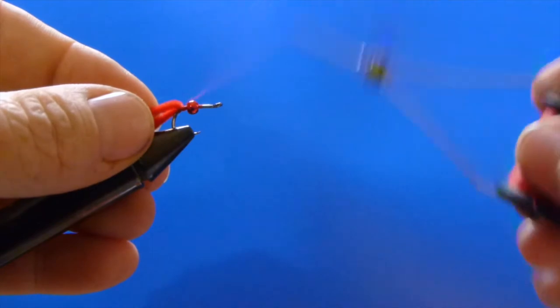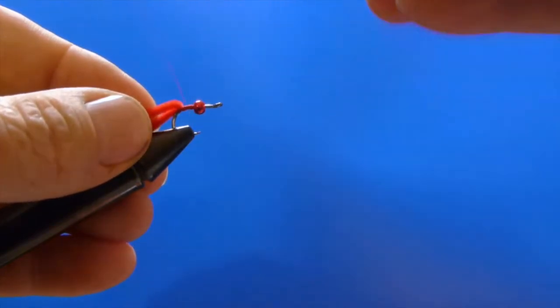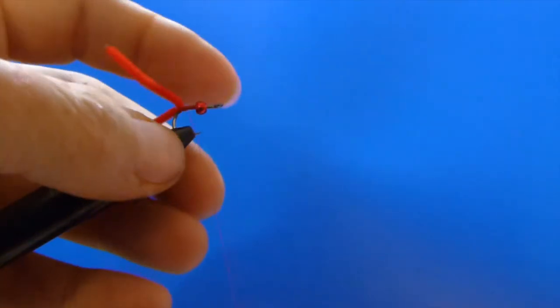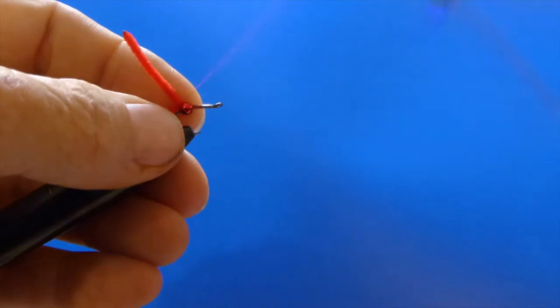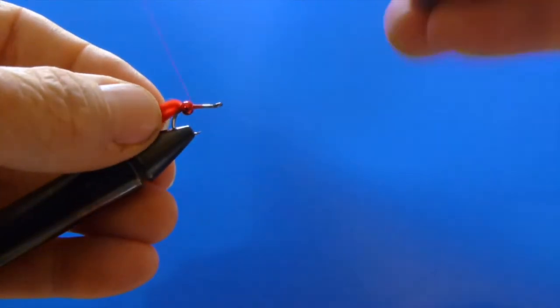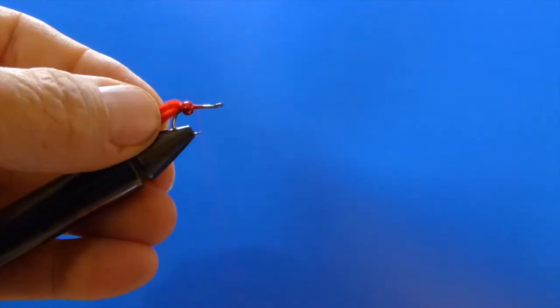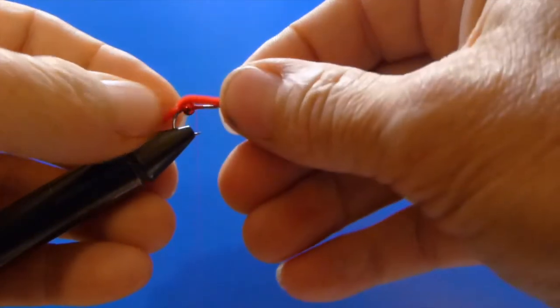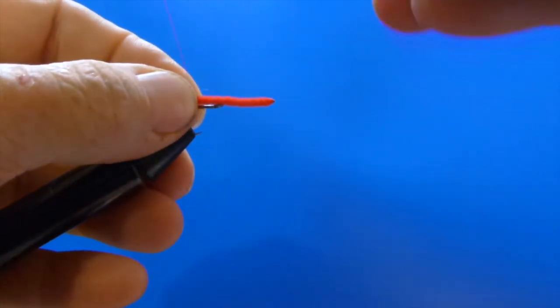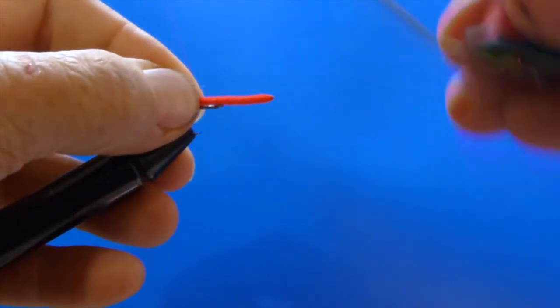We're going to pull it back, give it a wrap or two, and then we're going to pull the bead all the way back right up against the chenille. Now we're going to wrap over the bead, give it a couple wraps ahead of the bead just to lock it in there. And then we're going to tie in the chenille again, just like we did last time.